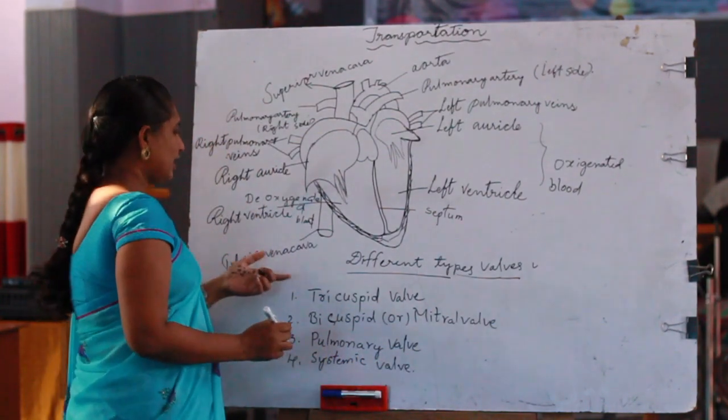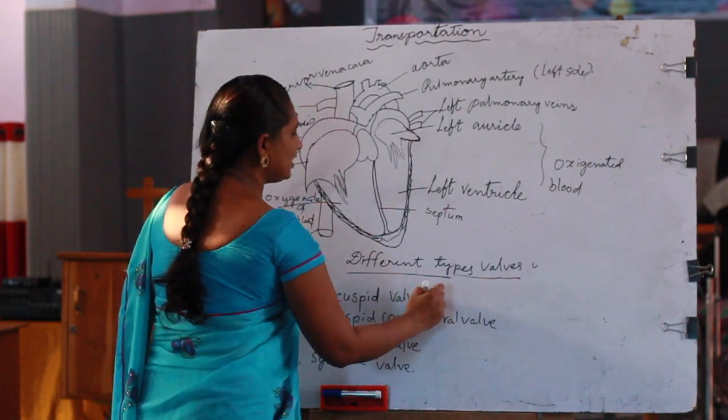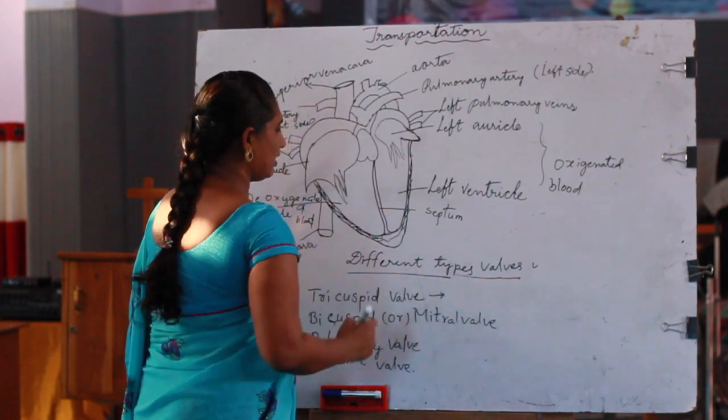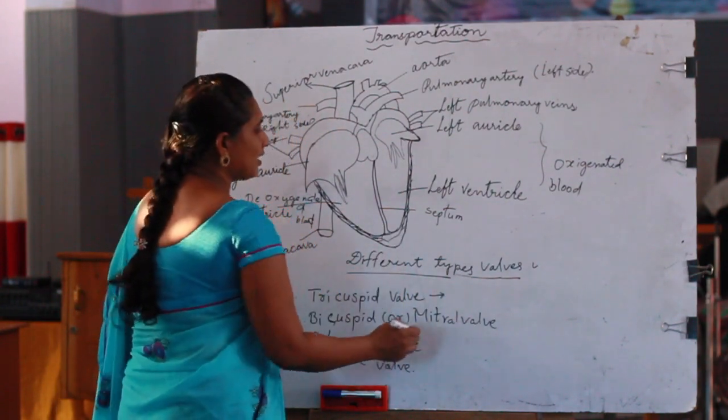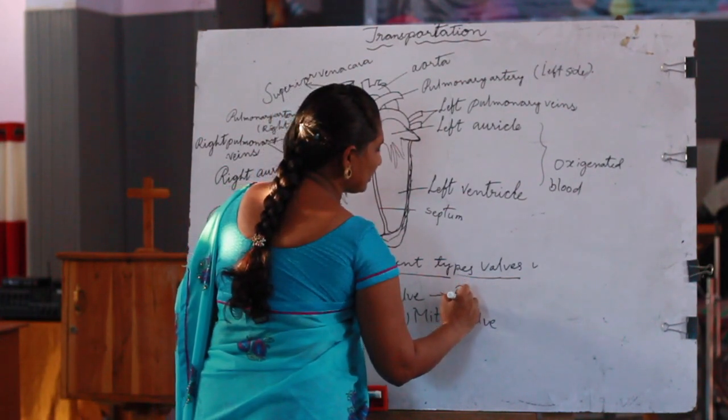The tricuspid valve is present in the right atrio-ventricular septum.